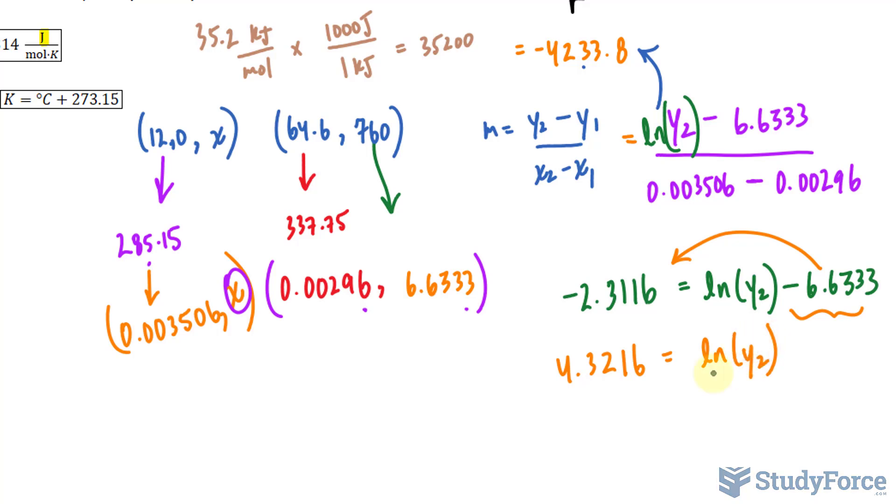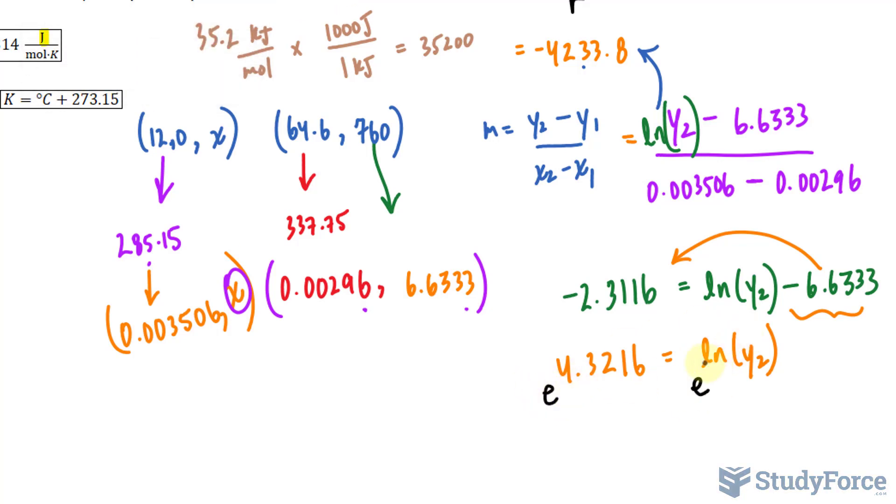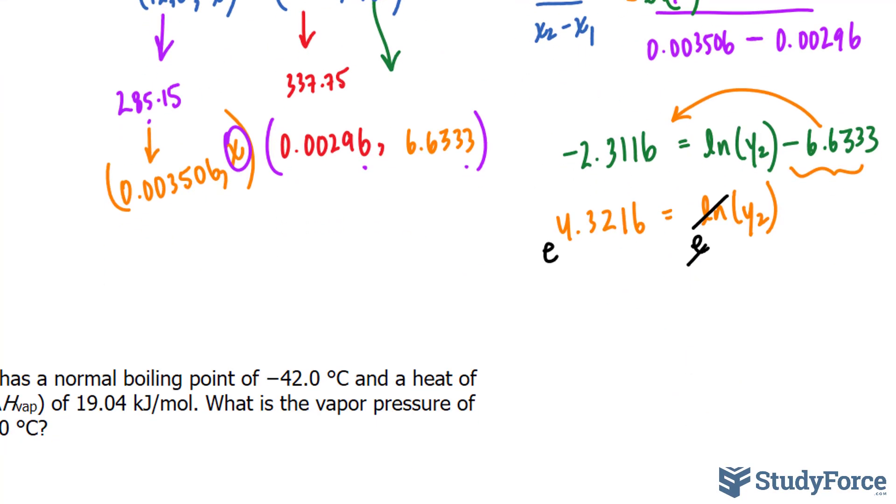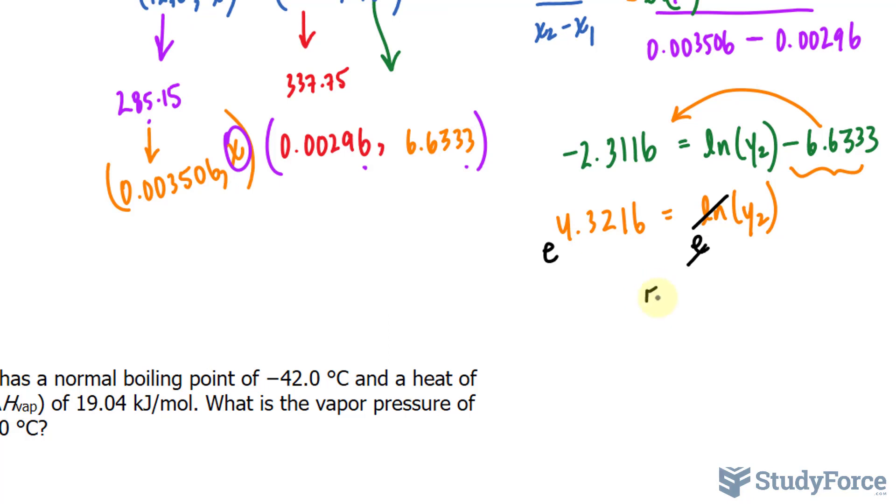To find out this number, we actually have to raise both sides of this equation as powers to the base e, because only then will this e and this ln cancel out, leaving you only with y2 on the right side. So we'll take e to the power 4.3216, and we end up with 75.309.